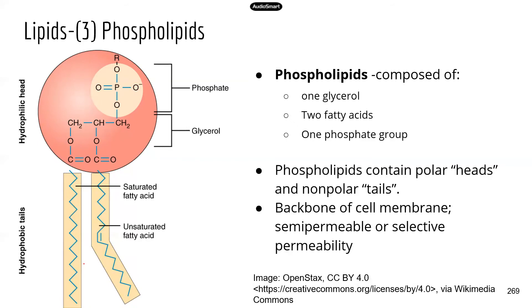Phospholipids are composed of three main components. There's phosphate over here. So you have one phosphate, which is bonded with four oxygen.